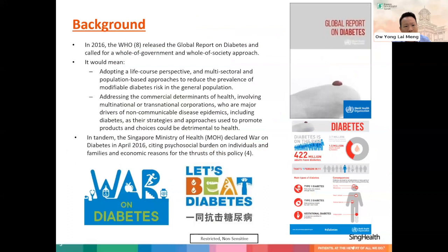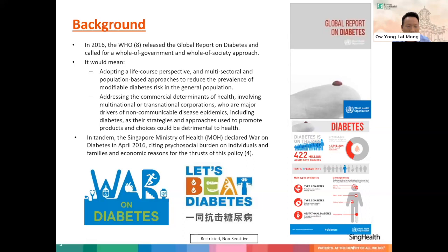The World Health Organization in 2016 released a global report on diabetes and a call for a whole-of-government and whole-society approach. This means countries are to systematically consider the health implications across policies in sectors such as housing, education, and transport, adopting a life course perspective and multi-sector and population-based approach. It also means considering the commercial determinants of health involved in diabetes management and prevention, and working with multinational or transnational corporations seen as major drivers of non-communicable diseases. Singapore's Ministry of Health then declared war on diabetes in April 2016.